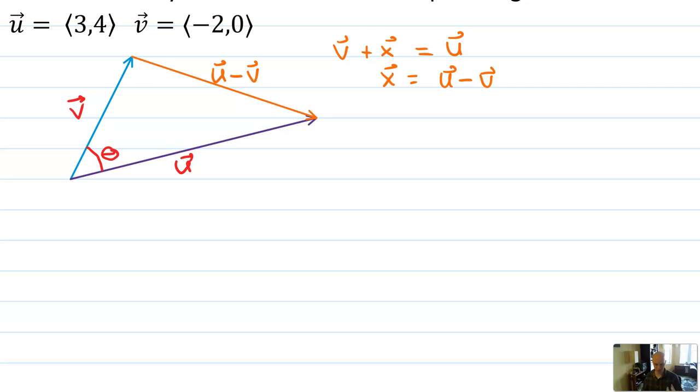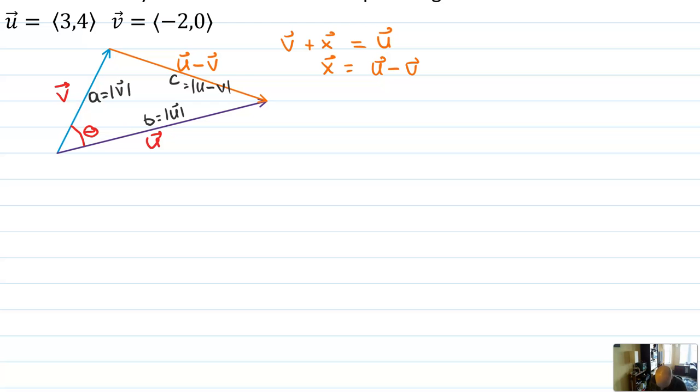Remember when you add two vectors, they get added tip to tail. So v and x are already in that tip to tail position, which means that v plus x would equal the result of wherever the tip and tail end. That's u, which means that vector x could actually be written as vector u minus vector v. Now, if I'm going to use the law of cosines here, I actually have a small problem. The problem is that these sides are not lengths. They're vectors.